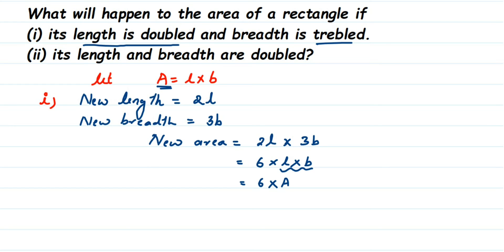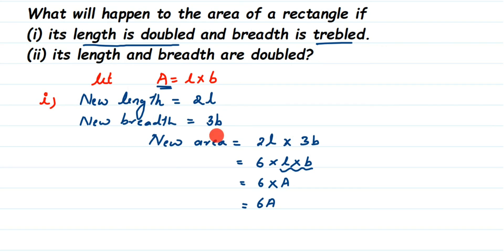So the new area is 6 times more than the actual area. We took A to be the normal area, and we got 6A — which means if the length is doubled and the breadth is tripled, the area we get is 6 times more than the actual area. That's the answer to the first question.